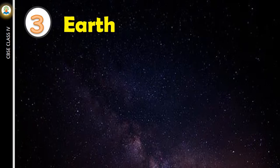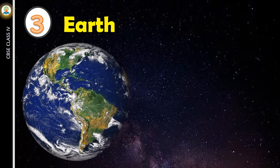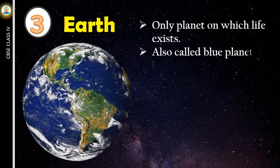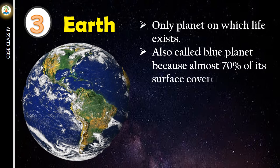Earth is the third planet in the solar system. It is the only planet on which life exists. It is also called blue planet because almost 70% of its surface is covered with water.